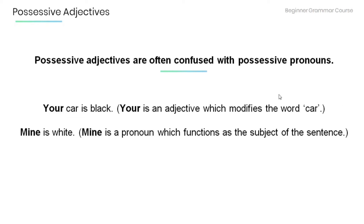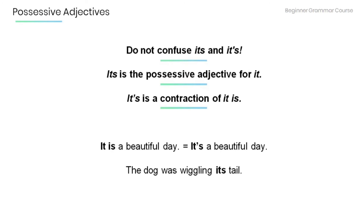Remember that possessive adjectives are often confused with possessive pronouns. For example: 'Your car is black' — 'your' is an adjective modifying the word 'car.' In the sentence 'Mine is white,' 'mine' is a pronoun functioning as the subject of the sentence.